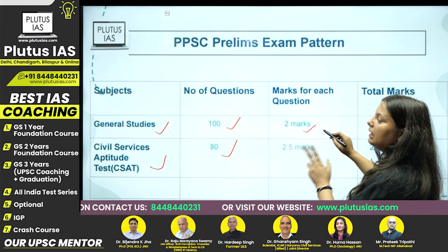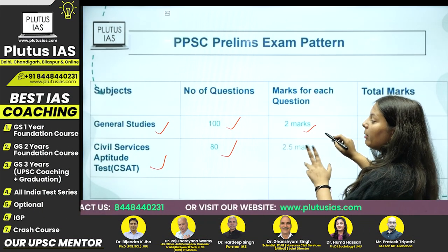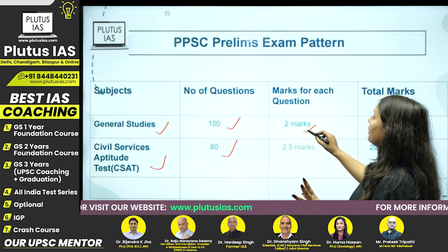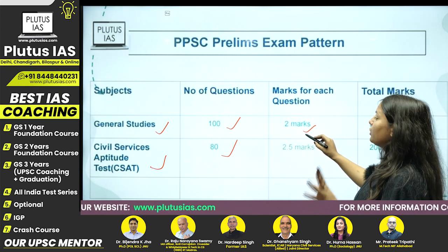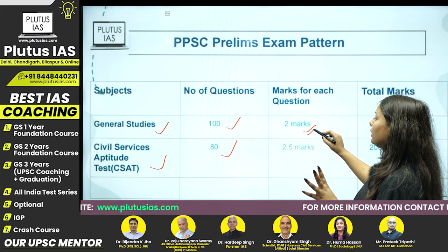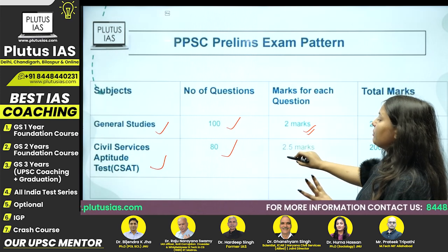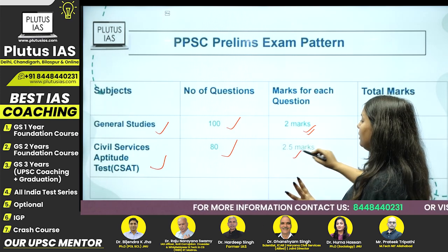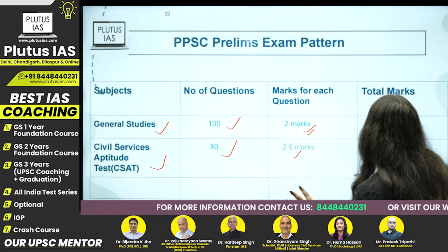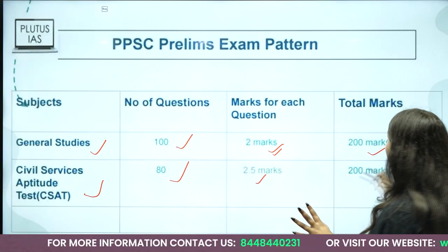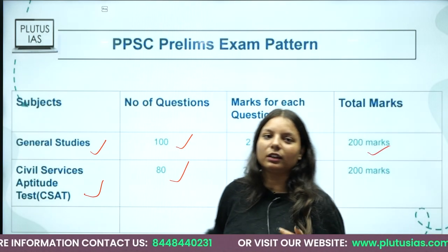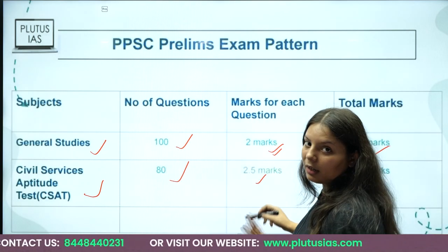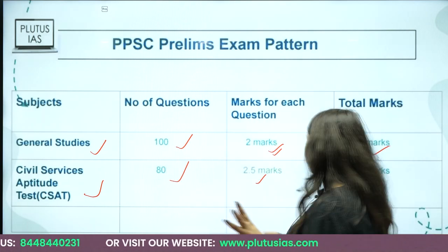In GS you have 100 questions, in which all questions are 2 marks each. Total marks for each paper are 200. Both papers carry 200 marks each.